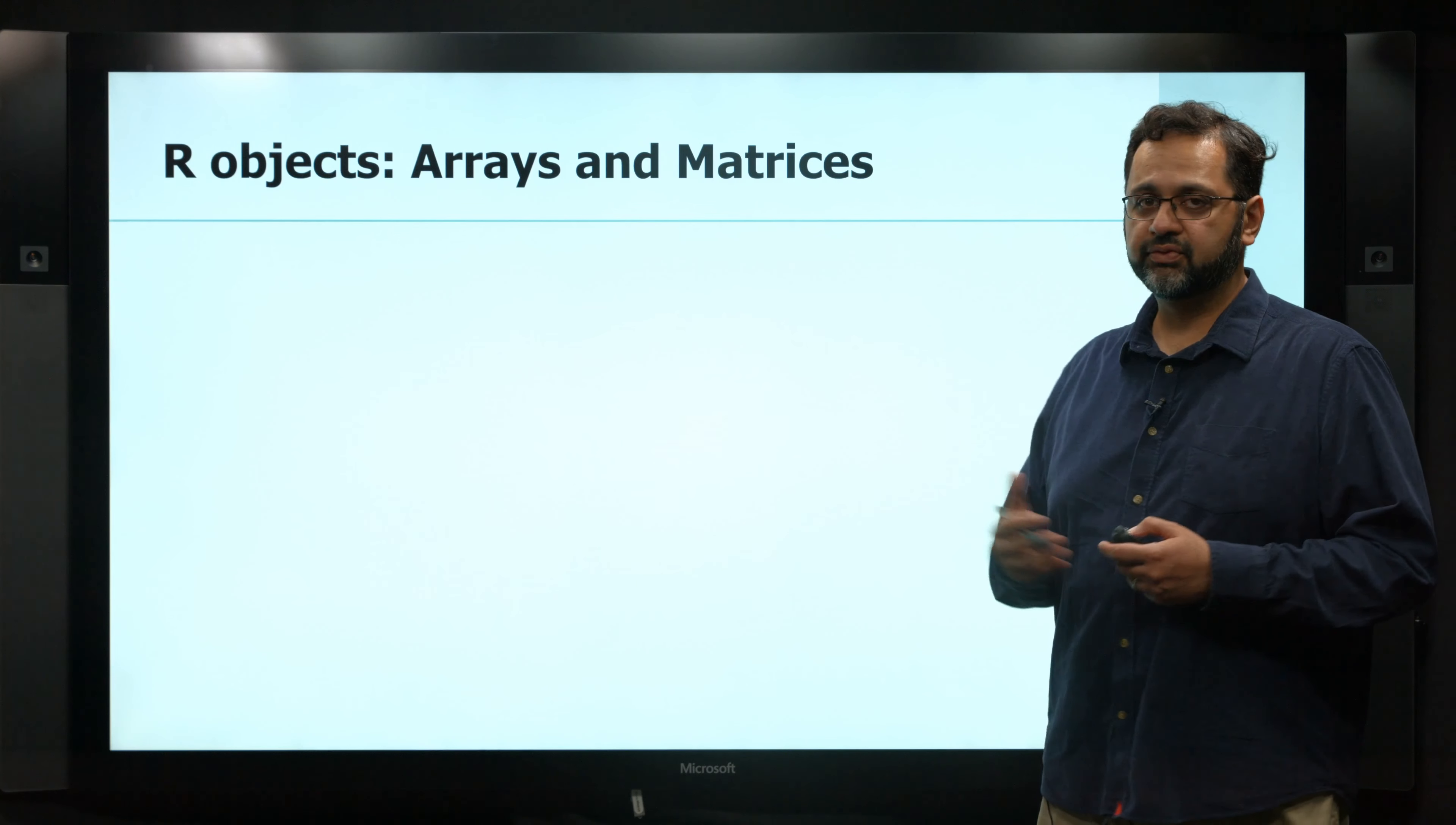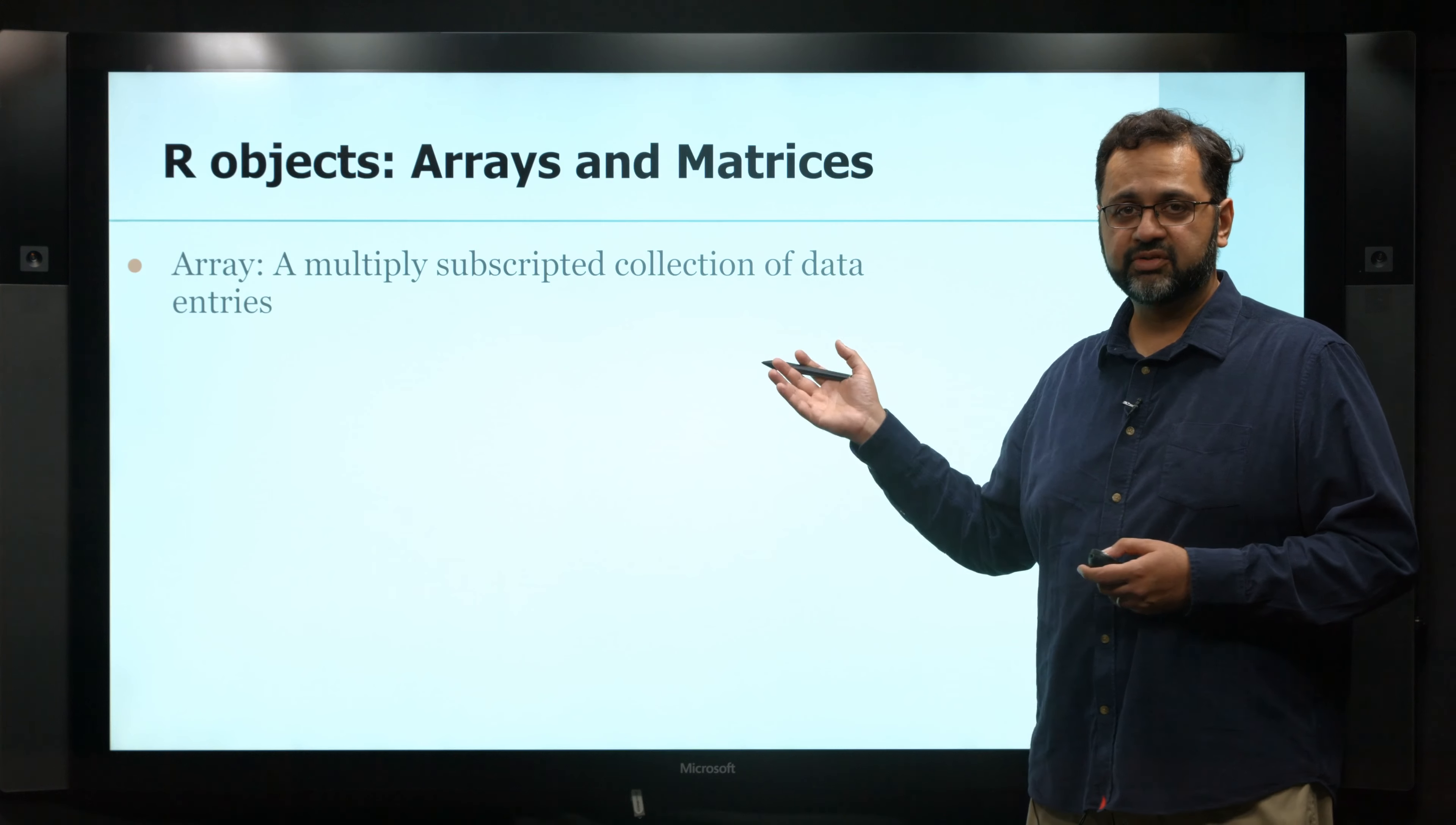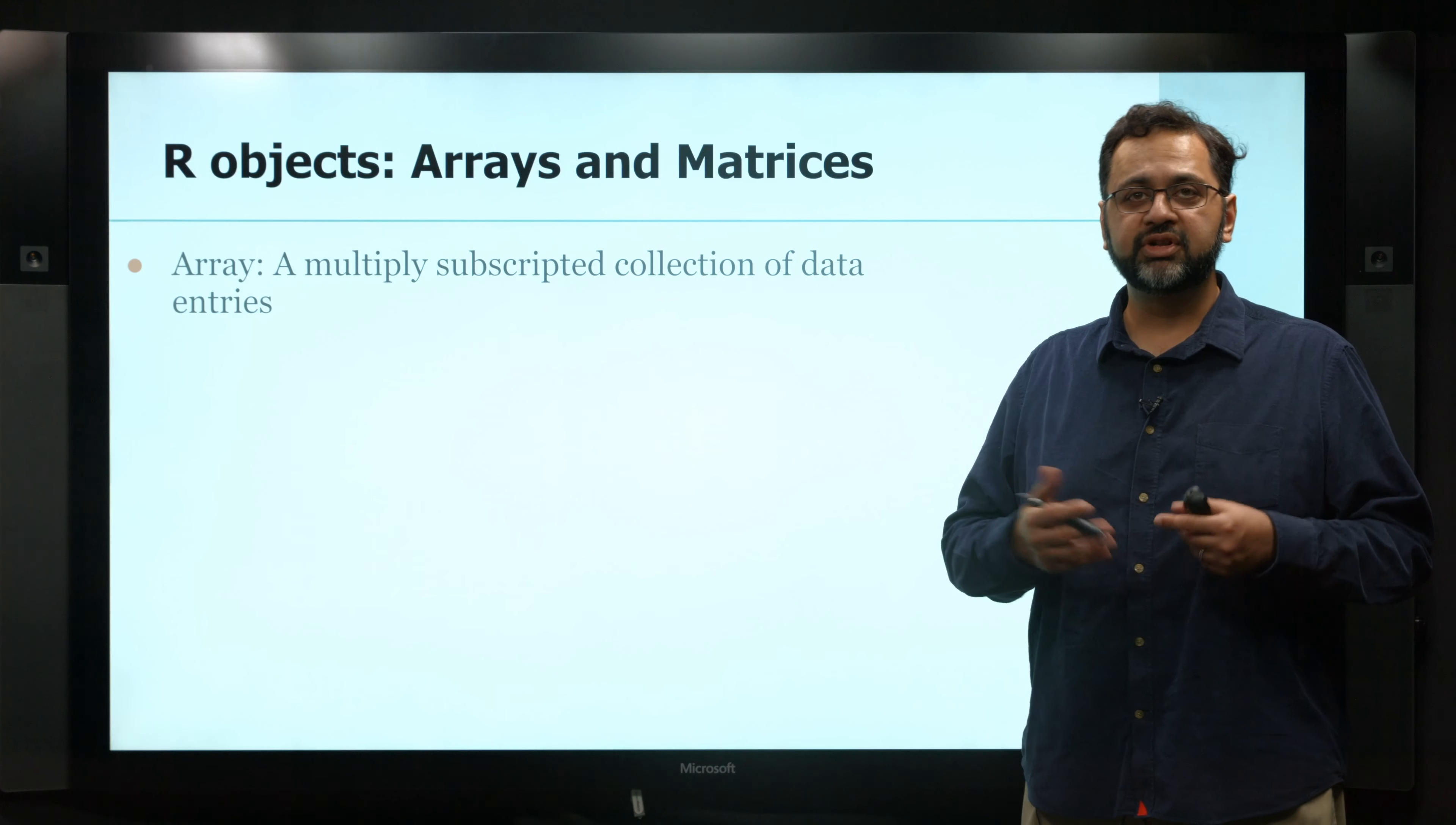So the next level of object is basically an array or a matrix, which is two-dimensional instead of one-dimensional. Array can be multi-subscripted. So this can have as many dimensions as you want. So think of matrix as a special version of an array where you only have two dimensions.